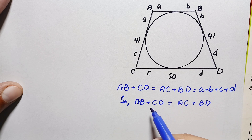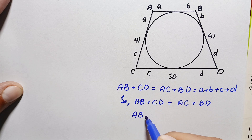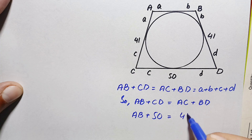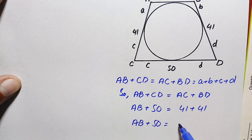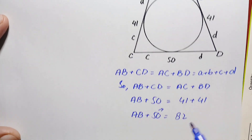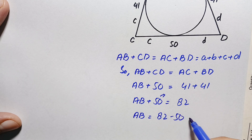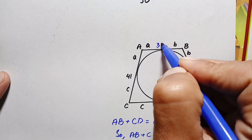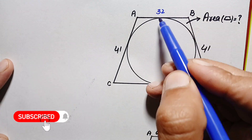We have the values of CD, AC, and BD. The value of CD is 50, AC is 41, and BD is also 41. So this becomes: AB + 50 = 41 + 41 = 82. Taking 50 to the right-hand side, AB = 82 − 50 = 32. Therefore the value of side AB is 32 units, and we write this in our original figure.